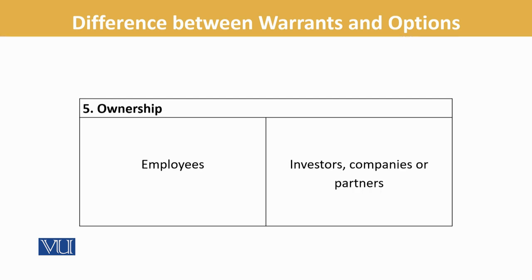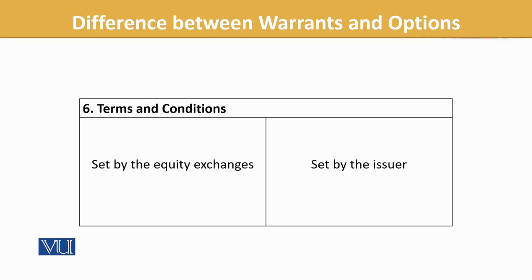Ownership — in options, normally it is the employees or the exchange bodies who are the real owners of that instrument. Terms — the terms of options are set by exchanges, because trading happens on the exchange. Whereas the terms of warrants are described by the issuer.